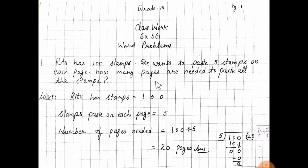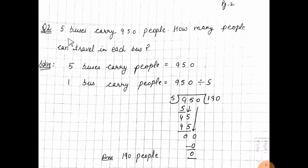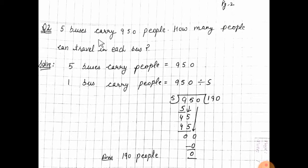Next is question number 2. 5 buses carry 950 people. How many people can travel in each bus? So, 5 buses carry 950 people — we need to find how many people can travel in each bus.